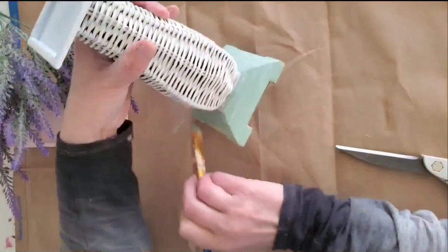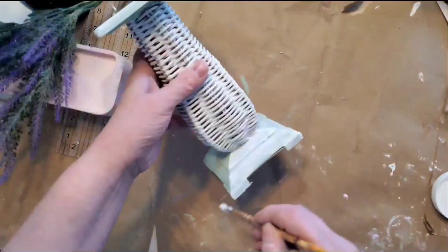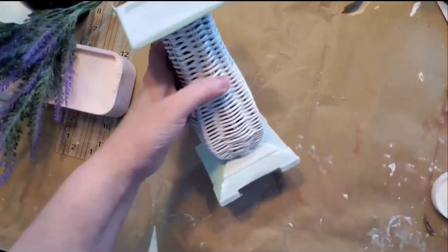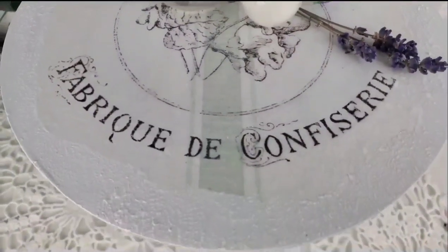Then after that has had a chance to dry, I'll apply a coat of DIY white wax and let that sit on there for a bit and wipe it back. And then I apply E6000 to glue the two pieces together.